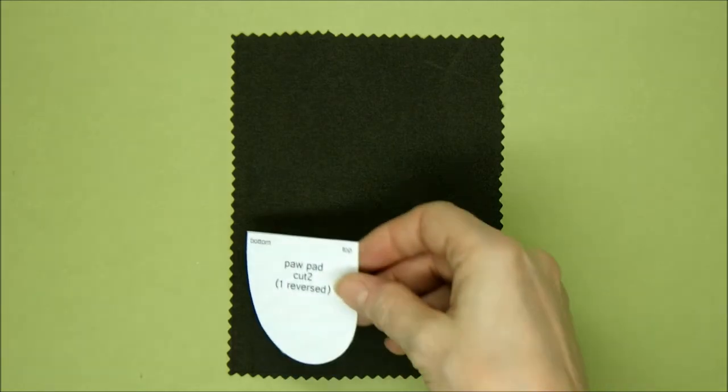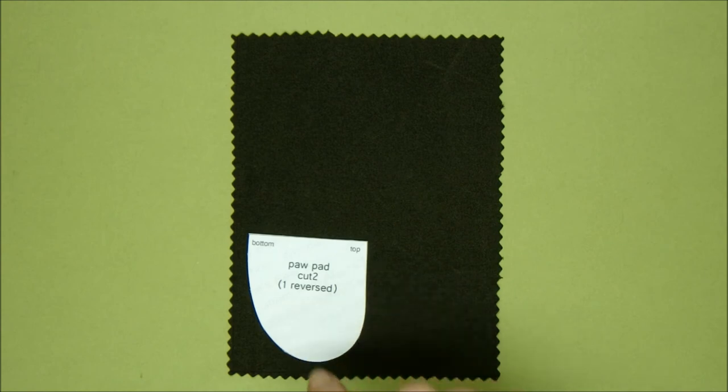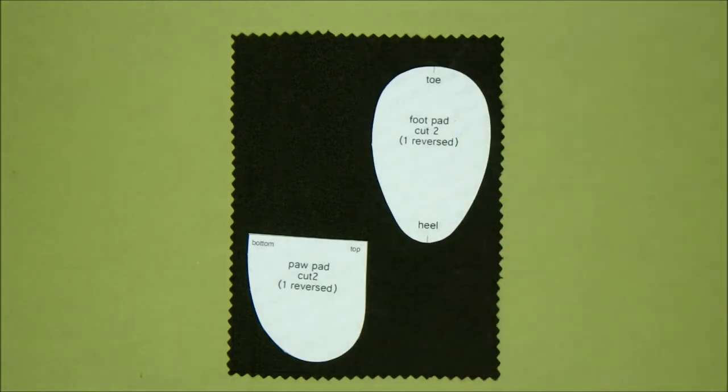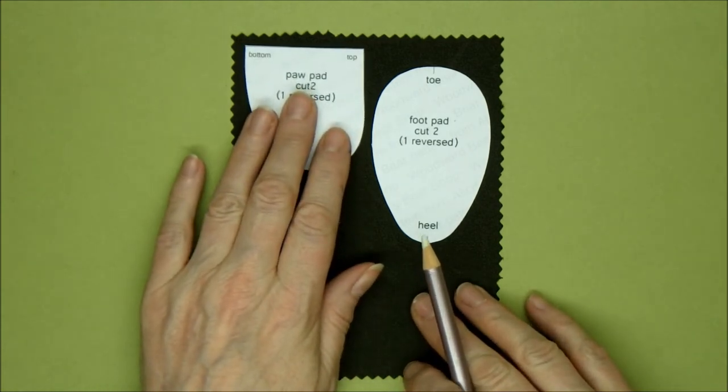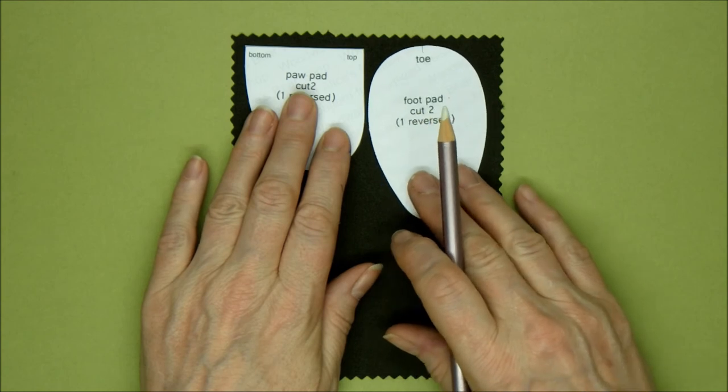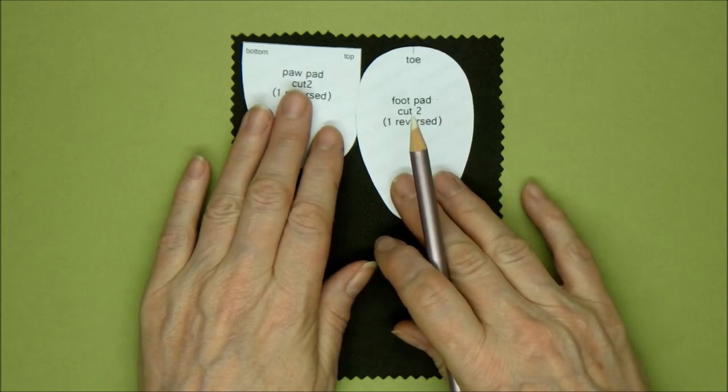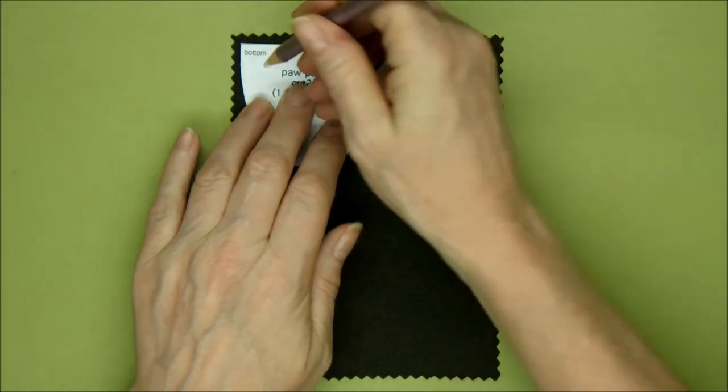You have a separate paw pad layout here. And because there's no pile direction, it's much easier. There's no arrow normally on paw pads. You may find it on some because you might want to use a patterned fabric. Lay them again right up to the edges, even on the cheaper fabric side. I really don't like waste.